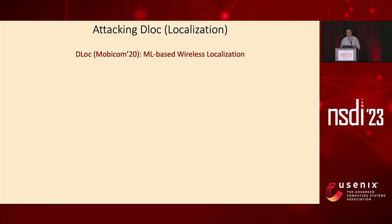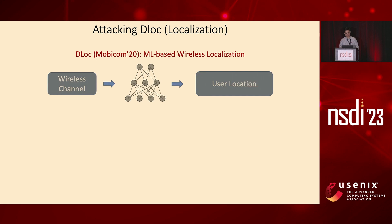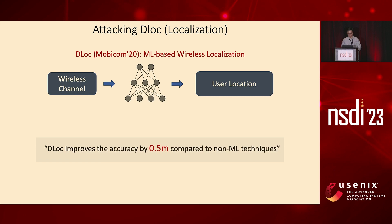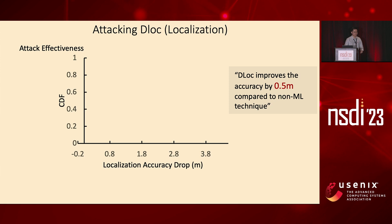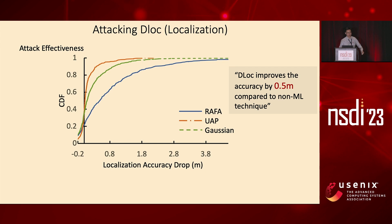Next, I will talk about results on attacking DLOC, which is a machine learning-based wireless sensing system. It takes wireless channels as input to predict user location information, and DLOC can improve accuracy by 0.5 meters compared to traditional algorithms. The x-axis shows the localization accuracy drop and the y-axis shows the CDF value. RAFA can increase DLOC's localization error by 0.7 meters on average, and can achieve nearly three meters at the 90th percentile. So if you are using this system for autonomous driving, your car is basically being predicted as in another lane.